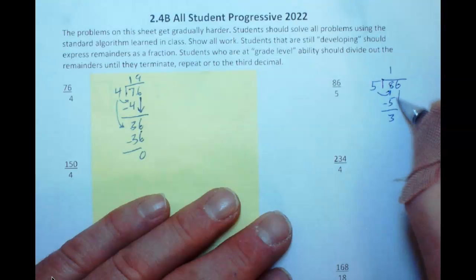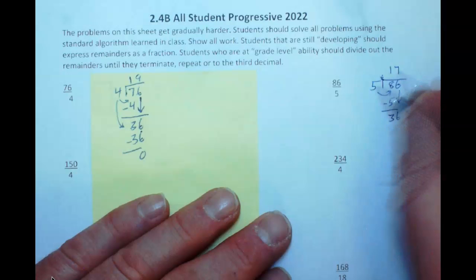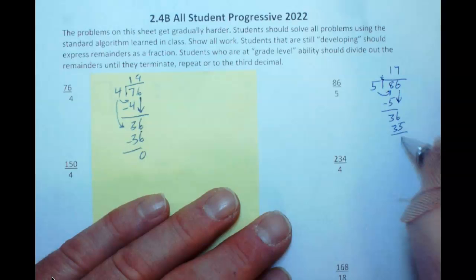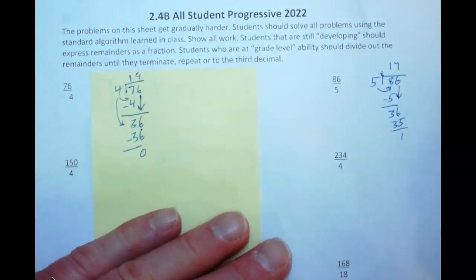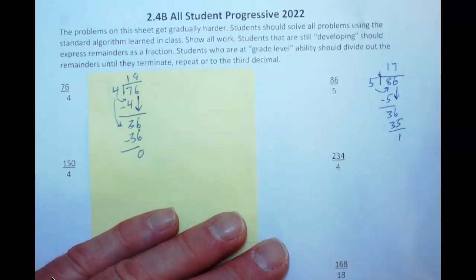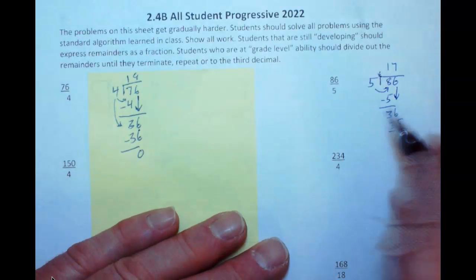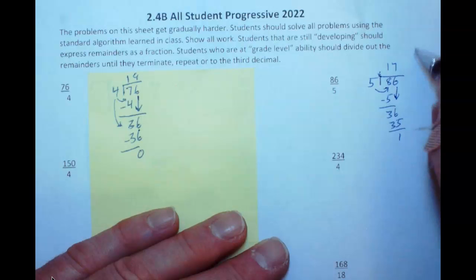You can bring down the 6. 5 does go into 36, it goes in there 7 times. 7 times 5 is 35. We have a remainder of 1, so students who are developing their division skills are not quite yet proficient. What you can do on this is you can say that this is 17, and there is one part left out of 5. Now I know you used to say 17 remained a 1. This is the answer that we are looking for.